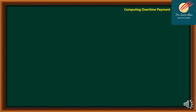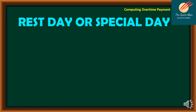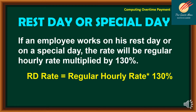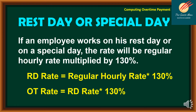Let's move on to the second type of overtime payment: the rest day or special day. If a government employee works regularly from Monday to Friday, then Saturday and Sunday are considered rest days. A special day is considered a local holiday — a holiday specific to a particular location, municipality, or city. If an employee works on his rest day or a special day, the rate will be the regular hourly rate multiplied by 130%. So: rest day rate = regular hourly rate × 130%, and OT rate = rest day rate × 130%.